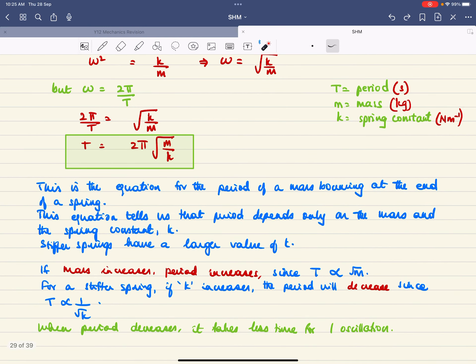If the mass increases, the period increases since t is directly proportional to square root of m. For a stiffer spring, if k increases then the period will decrease since t is inversely proportional to the square root of k. What does this mean? That means it will take less time for one oscillation.